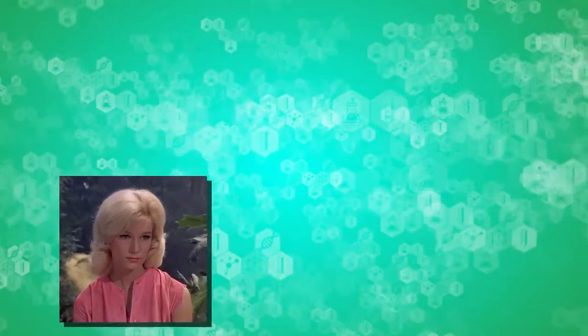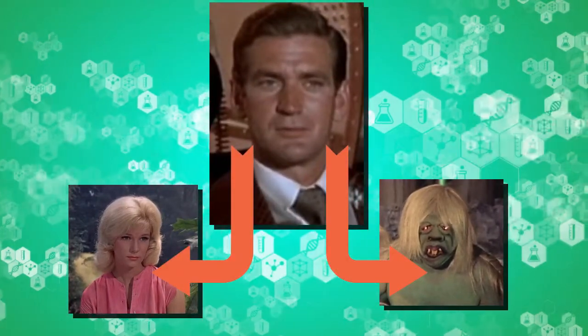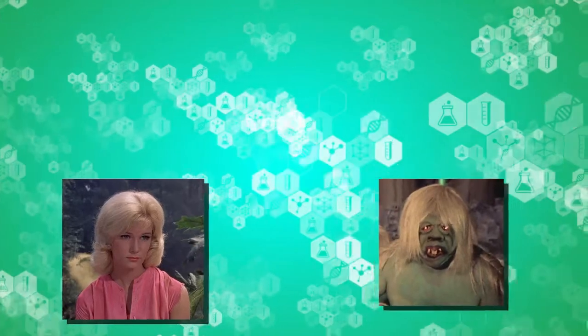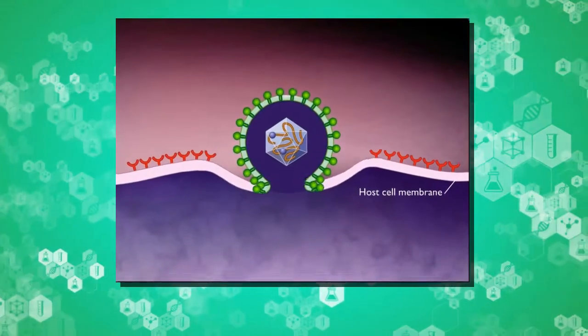How would we prove that the Eloi and the Morlocks had indeed both descended from modern humans? Well, we have signatures in our DNA that were written by retroviruses. They put their DNA into the DNA of our cells to fool them into making new retroviruses.